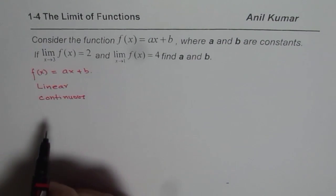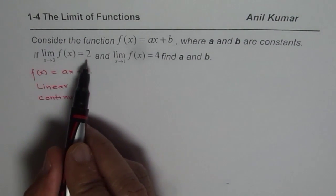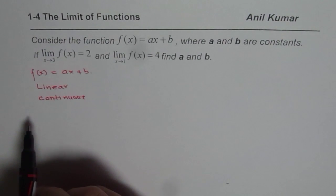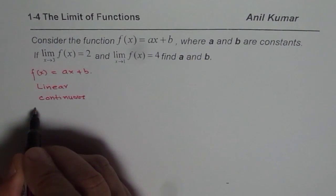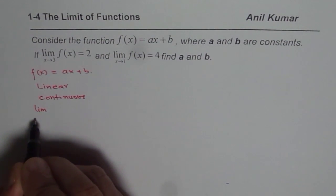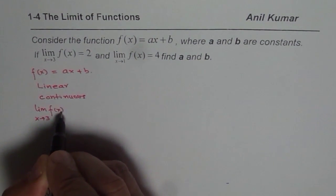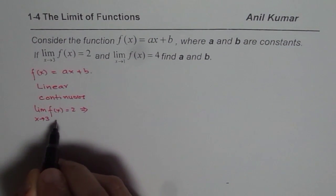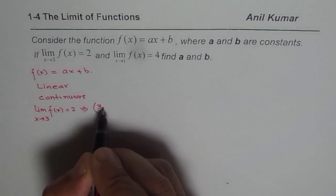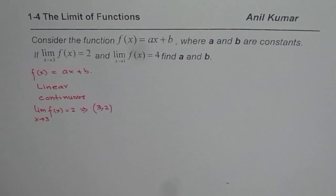Now since it is continuous, limit of the function should be same as value of the function. When we say limit of the function as x approaches 3 for f(x) is equal to 2, it also means that the value of the function at 3 is 2. That means the point (3, 2) lies on the function.